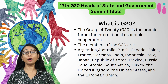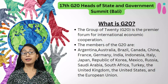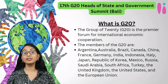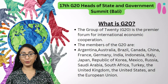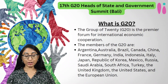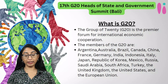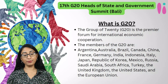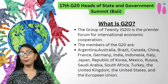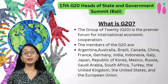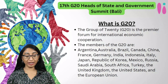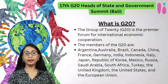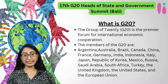The G20 brings together the world's major economies and is a premier forum for international economic cooperation. It accounts for around 75% of the global trade, 80% of the world GDP, and 60% of the population of the planet. So you can understand how important this grouping is, as it includes all the major economies.